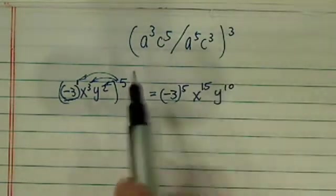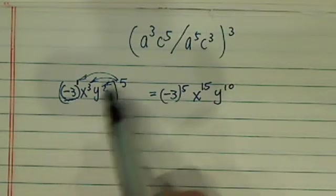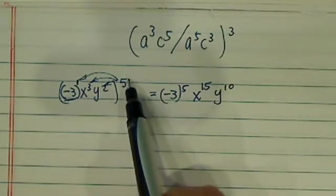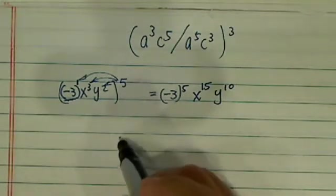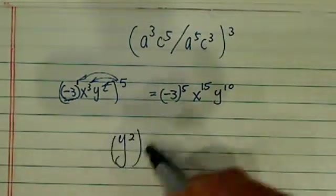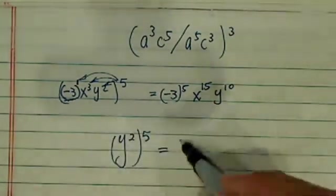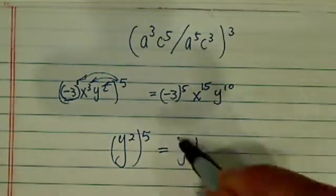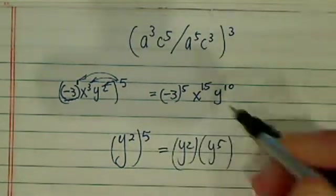A lot of students ask: how do you remember this is multiplication? There is another rule where you actually add. Well, here's the thing — if you have y squared to the fifth, if you think about it, it's really just y squared repeated five times.